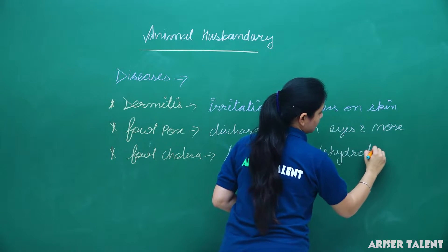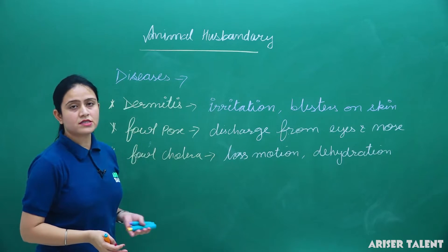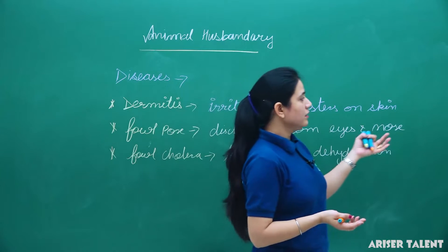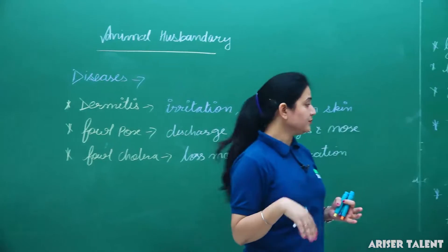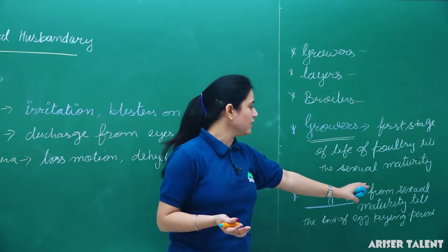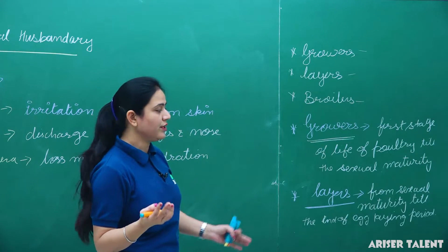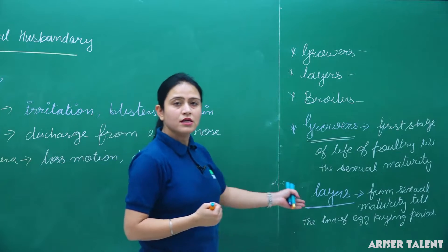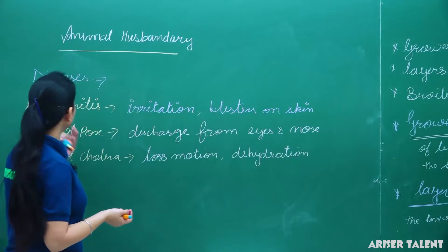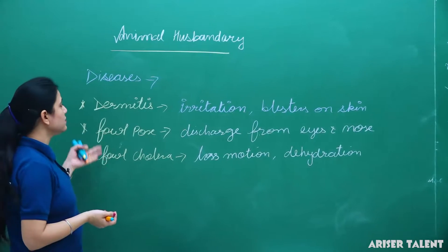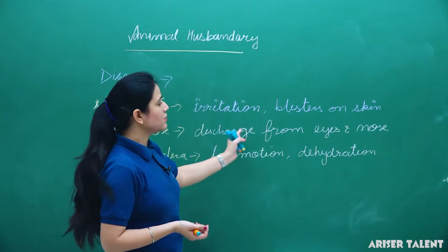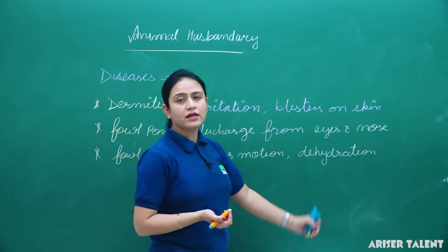Another famous disease in poultry birds is fowl cholera; symptoms of fowl cholera are loose motion and dehydration. To summarize: the three diseases in poultry are dermatitis (irritation and blisters on skin), fowl pox (discharge from eyes and nose), and fowl cholera (loose motion and dehydration).